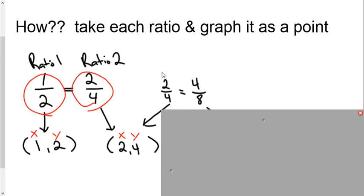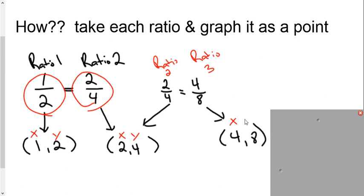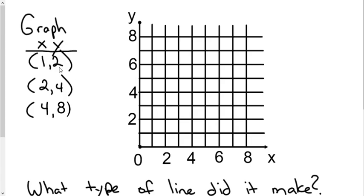We also have another proportion here. This is ratio 2, and it's 2 to 4. But we've got this third ratio — ratio 3 — and it's equivalent to ratio 2. 2 times 8 is 16, and 4 times 4 is 16, so we know this is a proportion. The top number becomes the x value, and the bottom number becomes the y value. We're going to take these three points or coordinates and graph them.